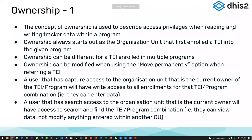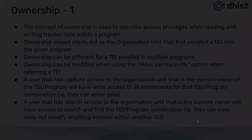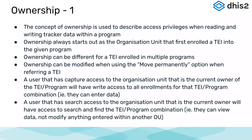Ownership can be different for a tracked entity enrolled in more than one program. For example, a mother may attend antenatal care at one facility, but her TB care is only offered at a hospital — so she's registered in the hospital, and the owner of that tracked entity in the TB program is the hospital, not the facility where she's enrolled for antenatal care. Because you can have more than one enrollment, ownership can be different for different programs across the same tracked entity.